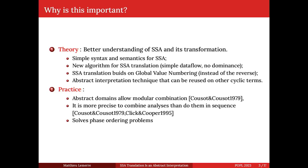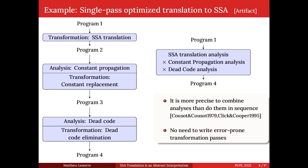This addresses the issue of which analysis should be done first — the phase ordering problem. In a classical compiler you transform your program into SSA form, then do constant propagation, then a transformation replacing expressions with constants, then dead code analysis, then remove useless statements from your program.